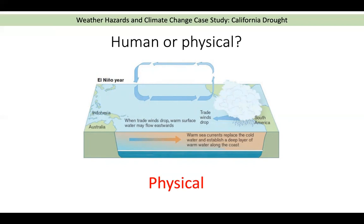El Niño: normally we have an area of low pressure and an area of high pressure, but during an El Niño year those two places switch over. So in Australia, where we normally get a lot of low pressure making it rainy and windy, that actually switches to the other side of the Pacific Ocean. We get areas of low pressure in South America and areas of high pressure in Australia and Indonesia where we'd normally have low pressure. This can be a common cause of drought in some places across the world.